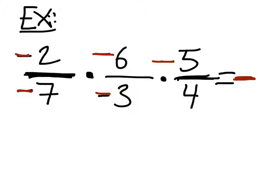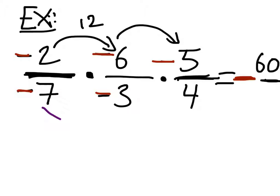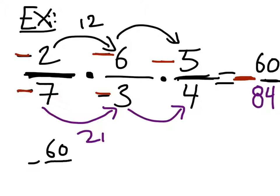Now that we know the answer is negative, we can ignore those negatives. So let's look at the multiplication. Let's look first at our numerators. Two times six, twelve times five, sixty. Very good. Then we look at the denominators. Seven times three, twenty-one times four, eighty-four. Very good. Can this be simplified? Yes, because right now we have negative sixty over eighty-four.